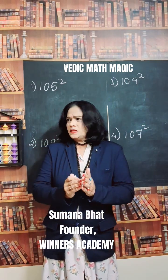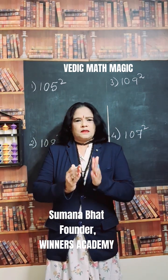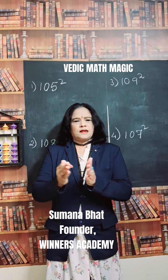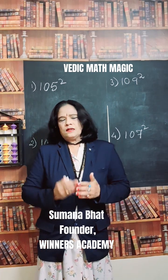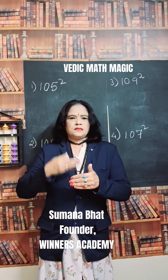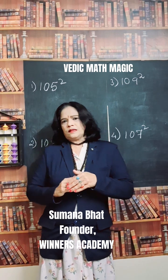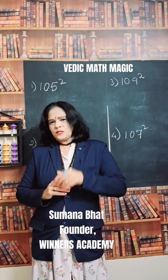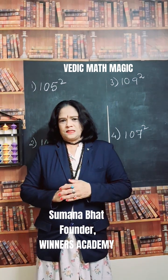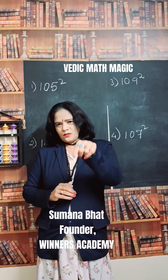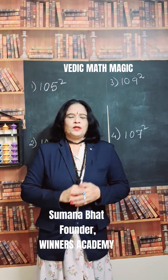The number is above base. Above base means the base is ten, hundred, thousand — those are the base numbers. Above base means the number is more than the base. The previous video covered below-base numbers, which you can also watch.